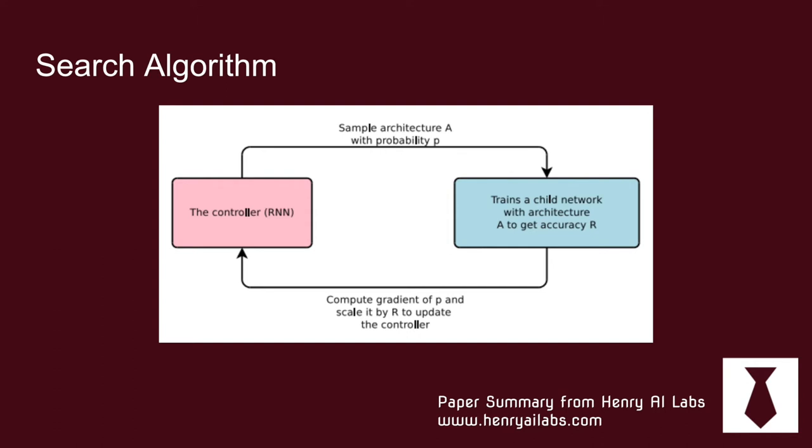Then they test it on a child network. When they do this, they get back an accuracy score. Different from supervised learning where you have a target that you're trying to hit and you can just do Y minus Y hat, you don't really have this in this search algorithm. So what they have to do is proximal policy optimization, which is derived from reinforcement learning, to update the parameters based on this accuracy value.